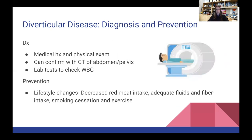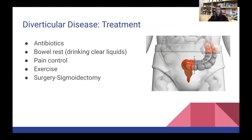For diagnosis, it's medical history and physical exam, confirmed with CT of the abdomen or pelvis, or a lab test to check white blood cell count for infection. Prevention involves lifestyle changes: decreasing red meat intake, getting adequate fluids and fiber, smoking cessation, and exercise. Treatment includes antibiotics, bowel rest, pain control, exercise, and in certain cases a sigmoidectomy — removal of a portion of the colon.